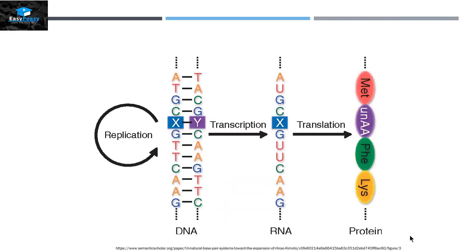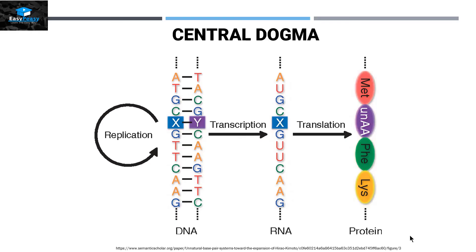Overall, when DNA makes DNA, that process is called replication. When DNA makes RNA, that process is called transcription. And when RNA finally makes protein, that process is called translation. All together, this process is called Central Dogma.